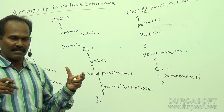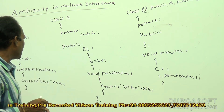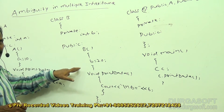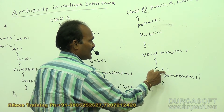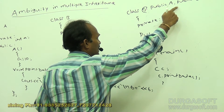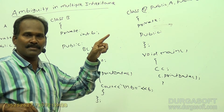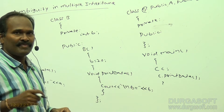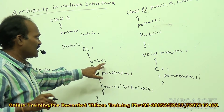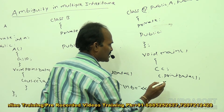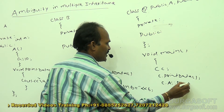If a particular member function belongs to the same base classes, this kind of ambiguity will come. The print data method is defined in both class A and class B. When we say C dot print data, the compiler gets confused whether it is from class A or class B because class C inherits properties from both. To avoid this problem, you have to say: C dot A scope resolution operator print data to call class A's version, clearly specifying the class name.